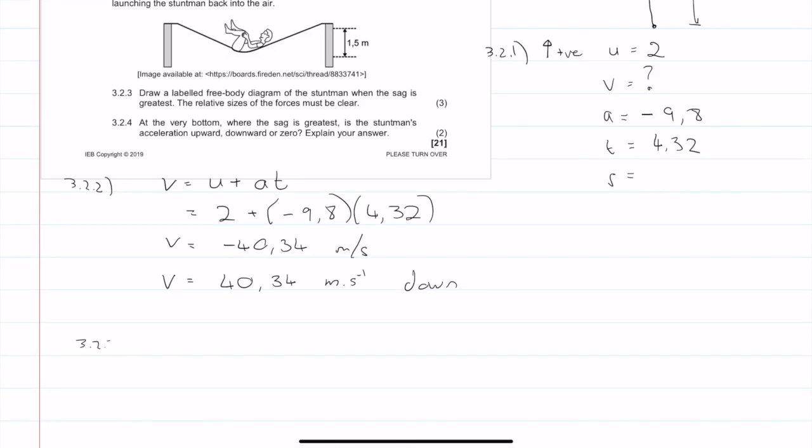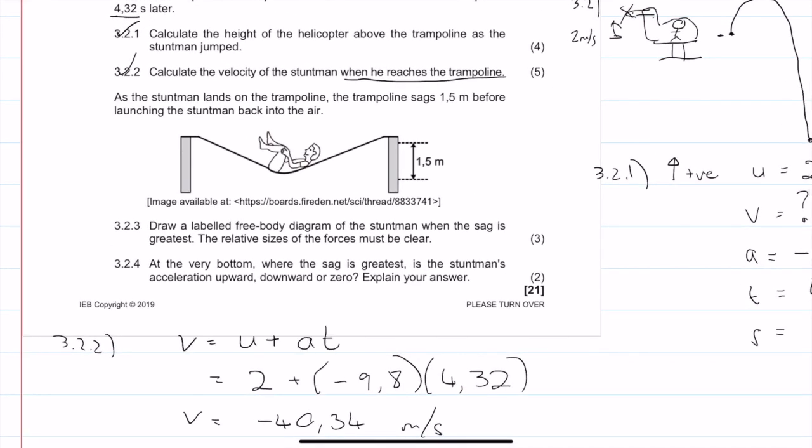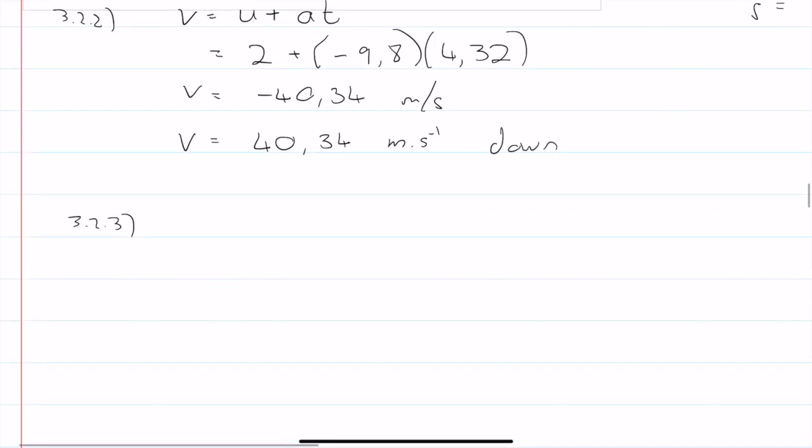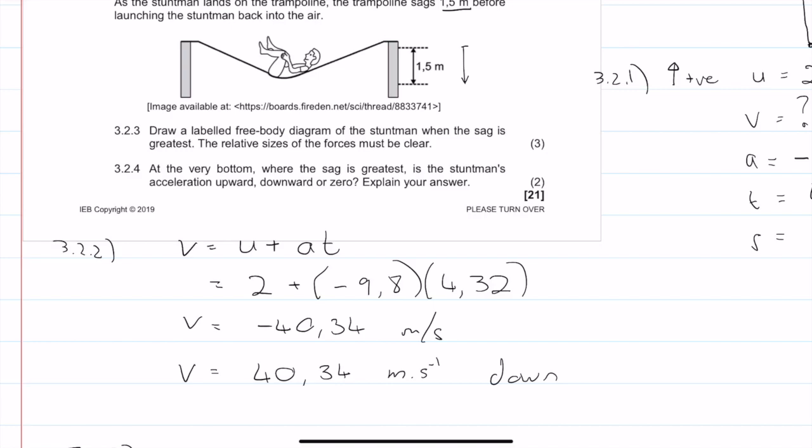Question 3.2.3 says, a stuntman lands on the trampoline. The trampoline sags 1.5 meters before launching the stuntman back into the air. So it moves down 1.5 meters. Then it says, draw a labeled free body diagram of the stuntman when the sag is greatest. So we need relative forces. When the sag is greatest, I'm going to draw forces. Because when the sag is the greatest, we know that after it sags, the stuntman is launched back into the air. So we know that this trampoline is exerting a force upwards, and we know that there's a weight as well. But the force upwards must be greater because the stuntman is launched back upwards.